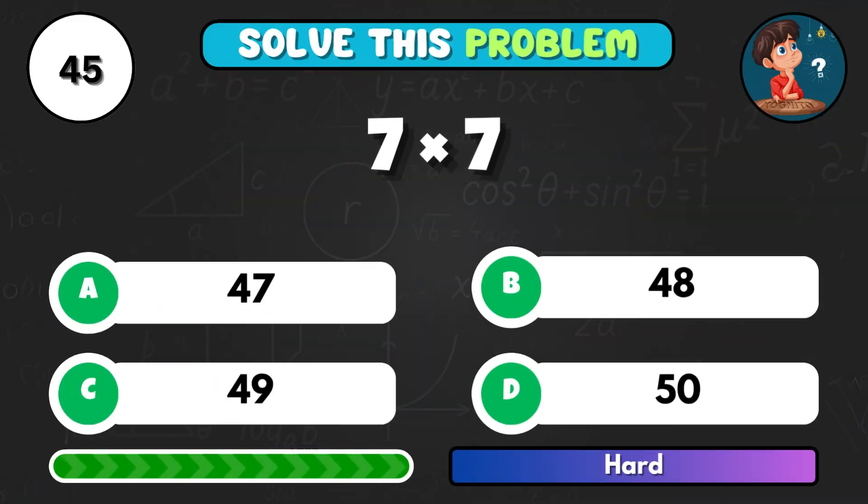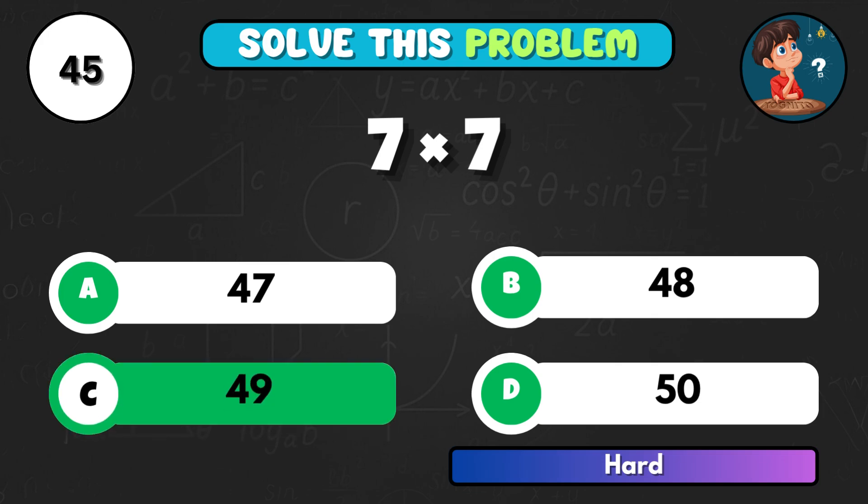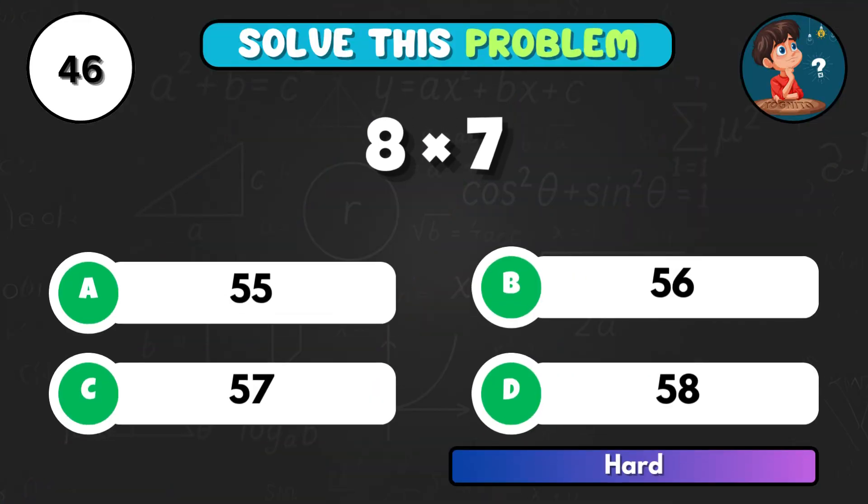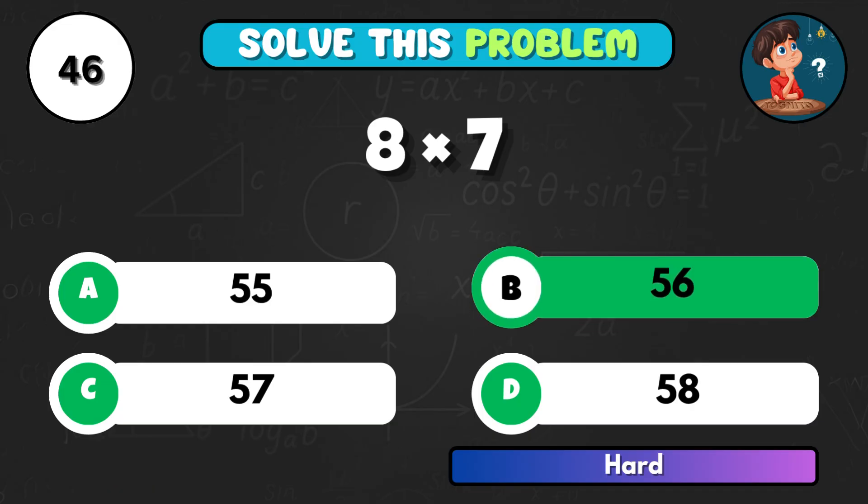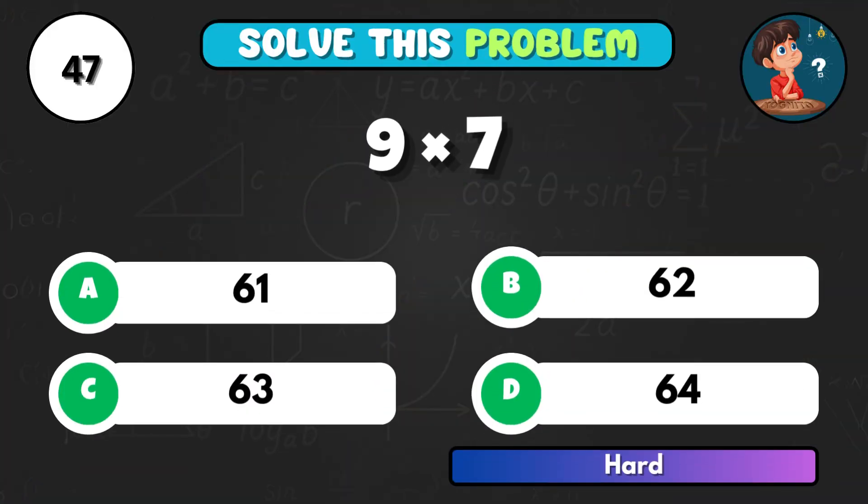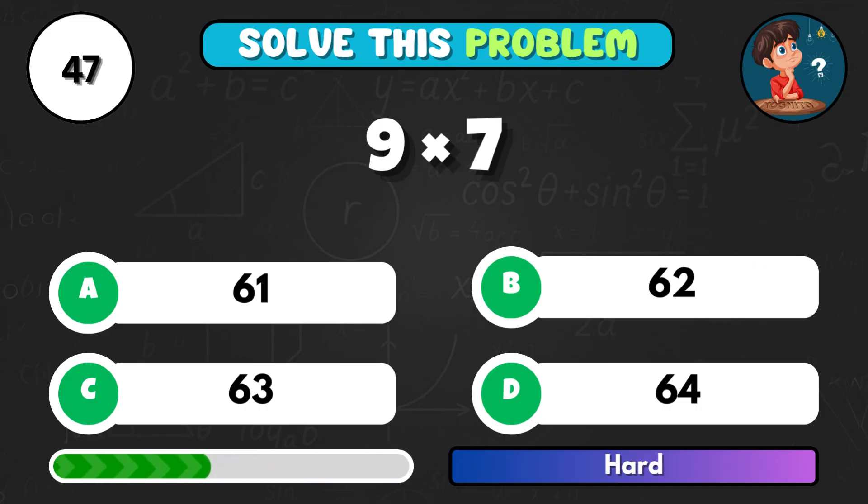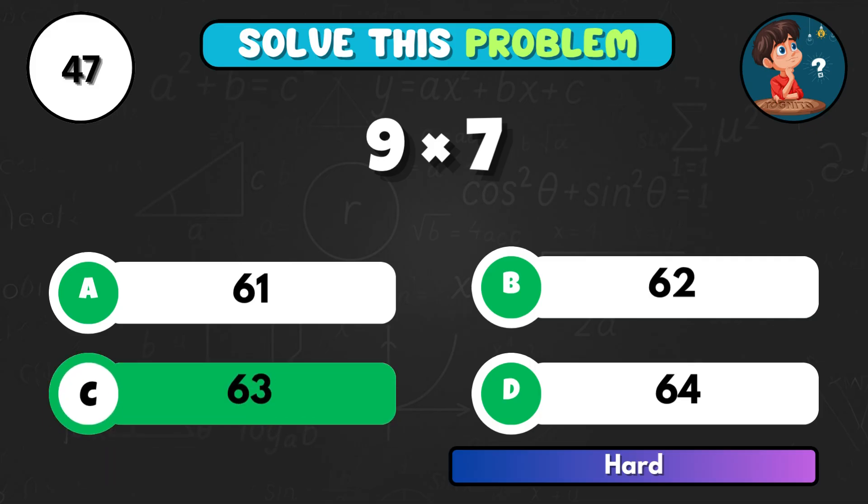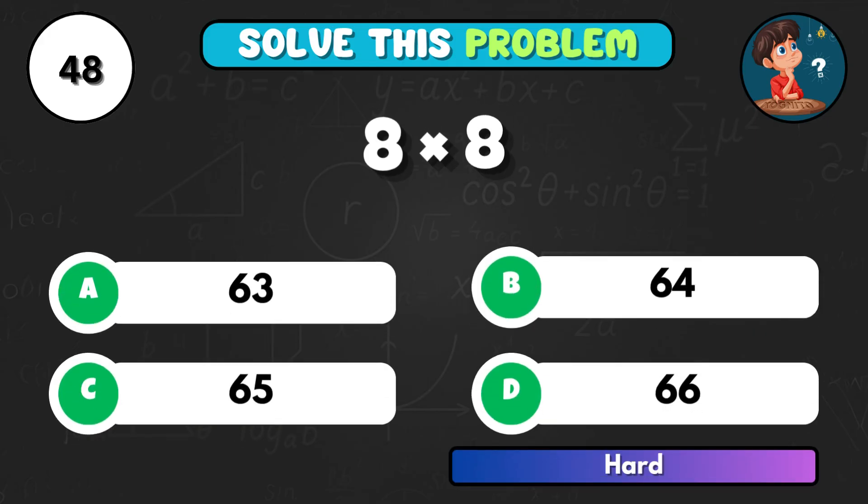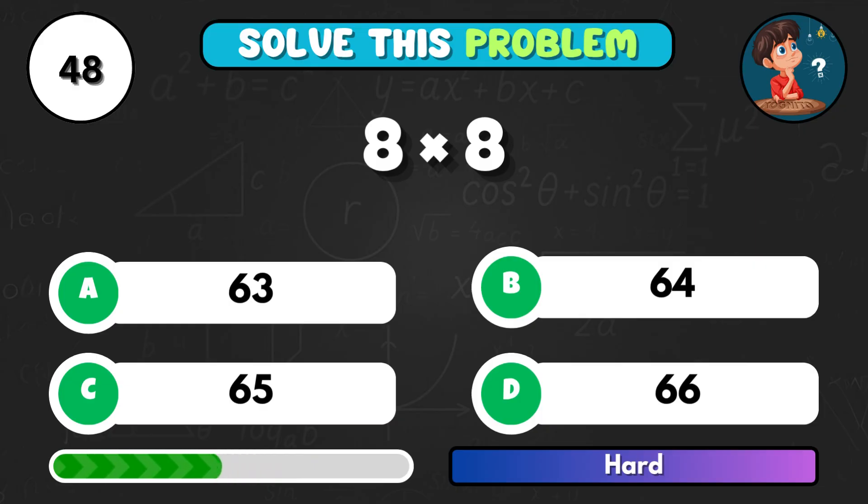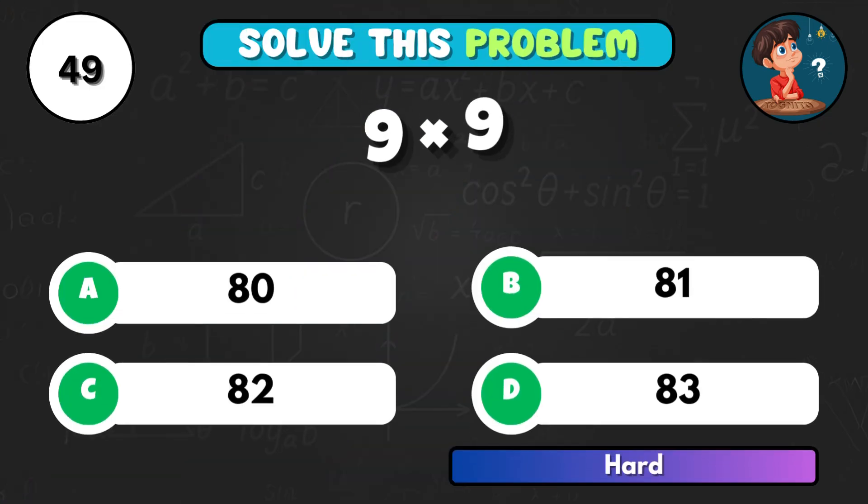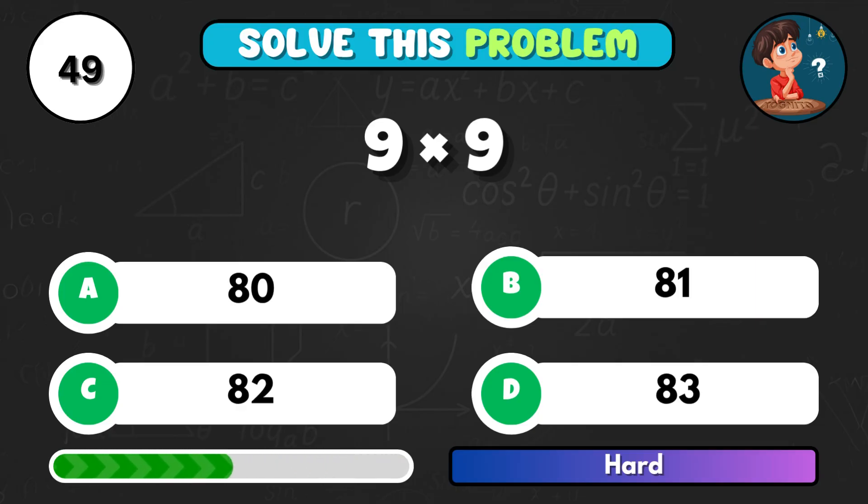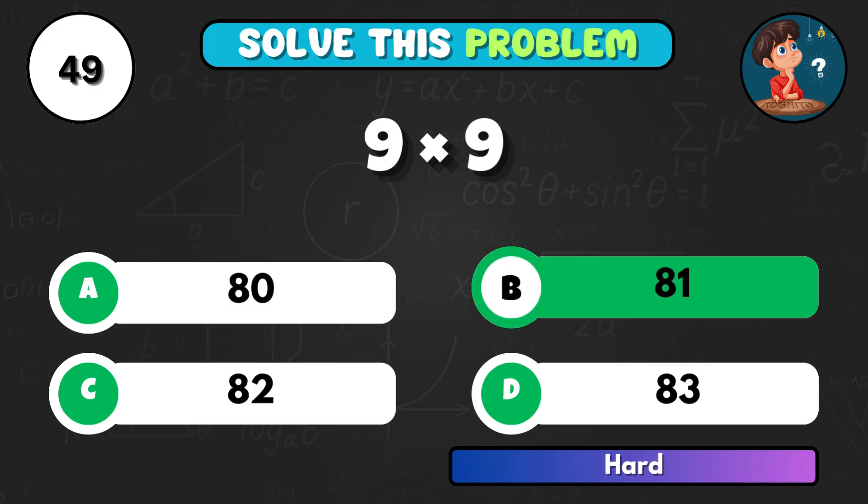7 squared, 7 times 7. Answer is C, 49. 8 times 7. Correct option B, 56. 9 times 7. Answer is C, 63. 8 times 8. Correct choice B, 64. 9 times 9. Answer is B, 81.